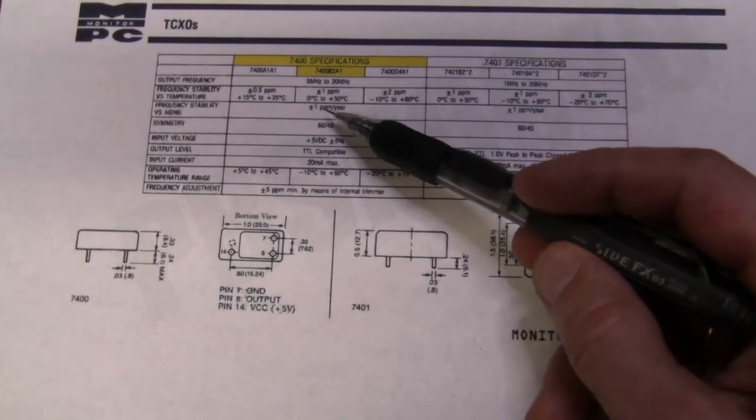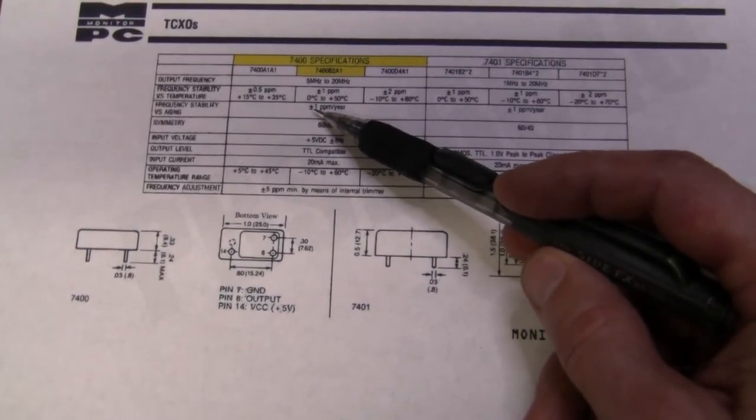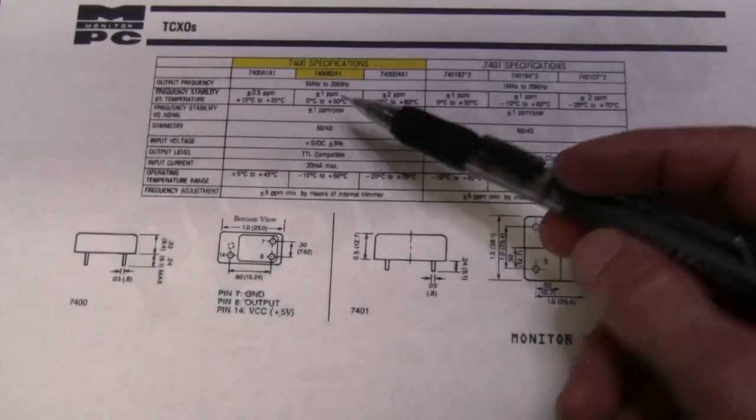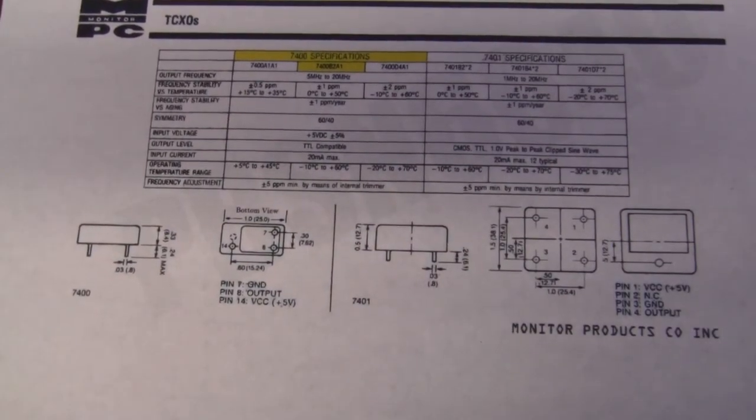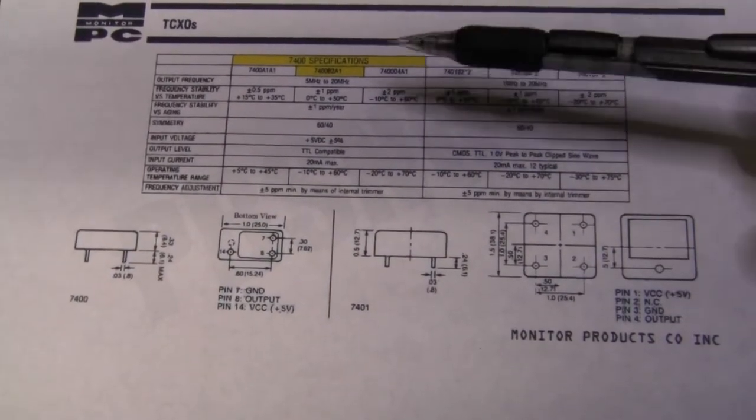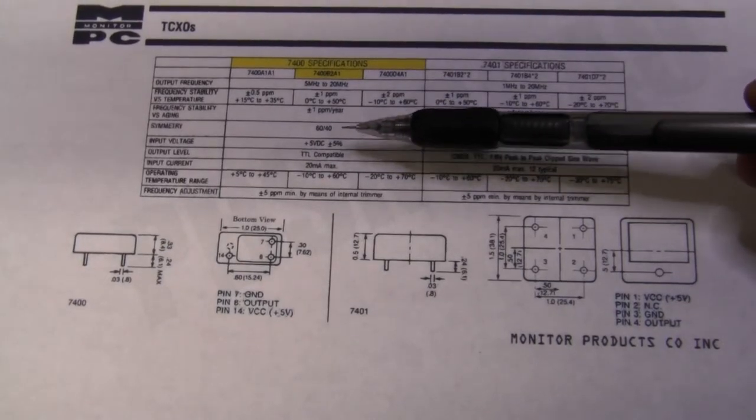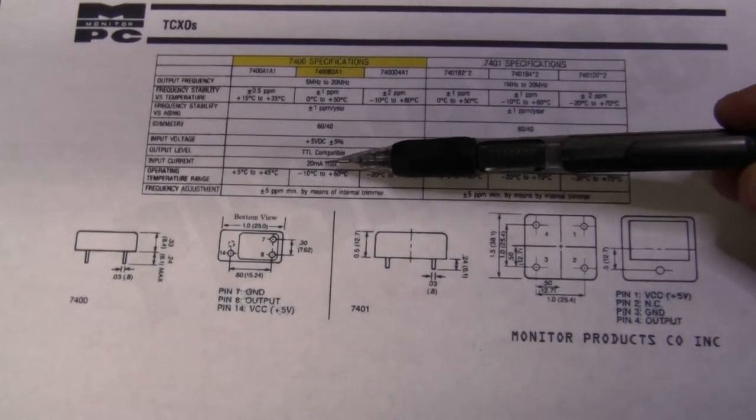That's called aging, which is pretty good, and they consume about 20 milliamps at 5 volts and they give out square wave 10 megahertz.